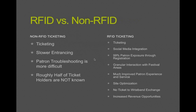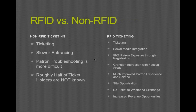This is a simple chart comparing RFID versus non-RFID, purely focusing on the ticketing side. On the non-RFID side, we're talking about the basic elements. Non-RFID ticketing tends to be slower on entry. If you're scanning and doing tears or a wristband exchange, that's going to be really slow — slower than people who are being fulfilled wristbands up front.